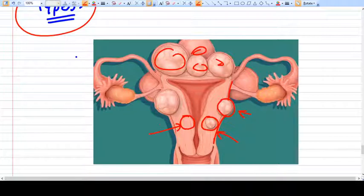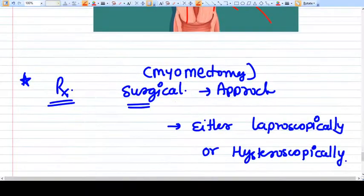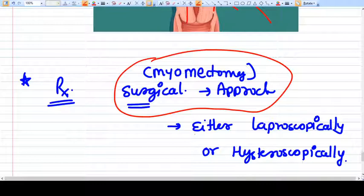The type of fibroid determines how we can remove it. If we have a subserosal or myometrial fibroid, we can go for laparoscopy and remove the fibroid. If it's intramural or very deep intramural and also submucosal with some part under the mucosa, then it's approachable from the hysteroscopic route. This will decide how we should remove the fibroid. Myomectomy is a surgical approach, a very good and definitive approach.